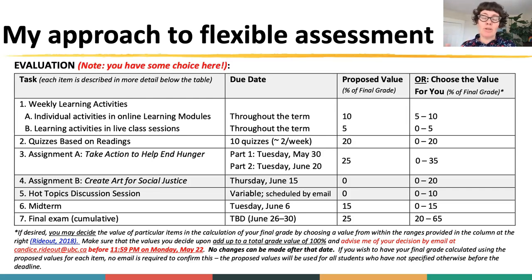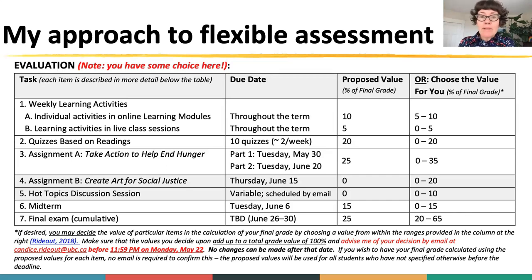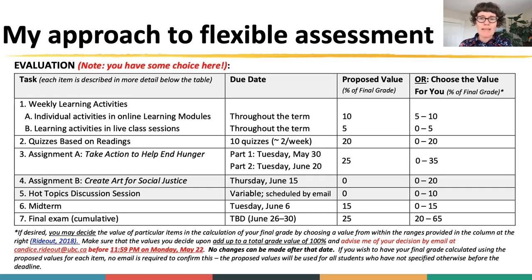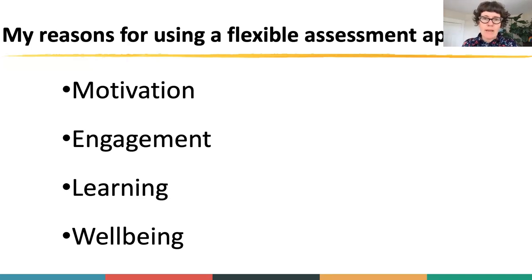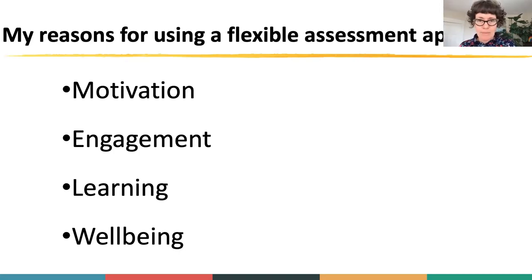There's a proposed grade value that students use by default if they don't specify otherwise, but they can make adjustments within ranges I specify — it's not a free-for-all. The decision about grade weights is made at the beginning of the term, usually about a day or two after the add deadline, so within the first two weeks. Students can use the proposed grade value or adjust it depending on their priorities and interests, and it becomes a learning contract — this is the plan and it doesn't change later in the term.